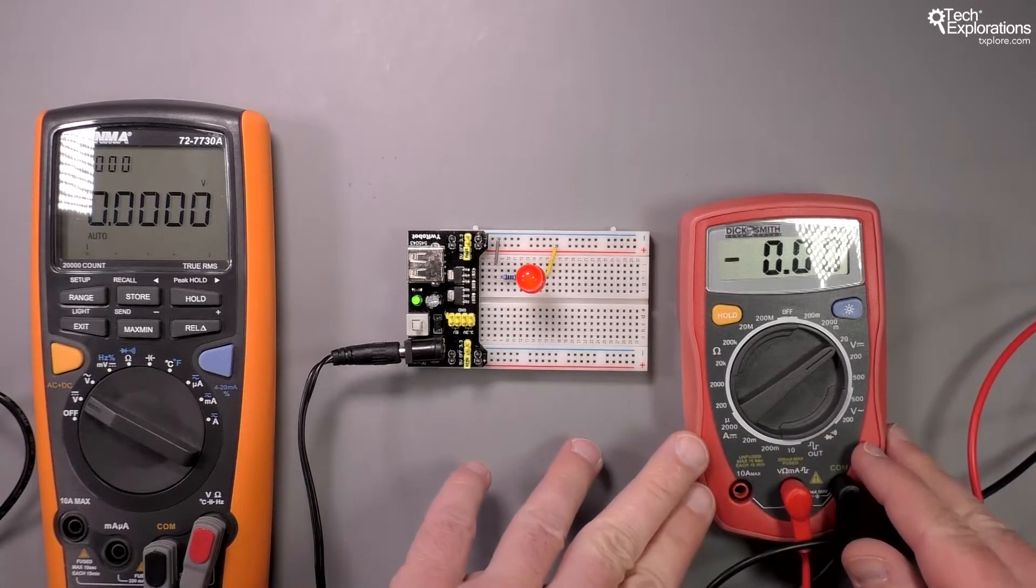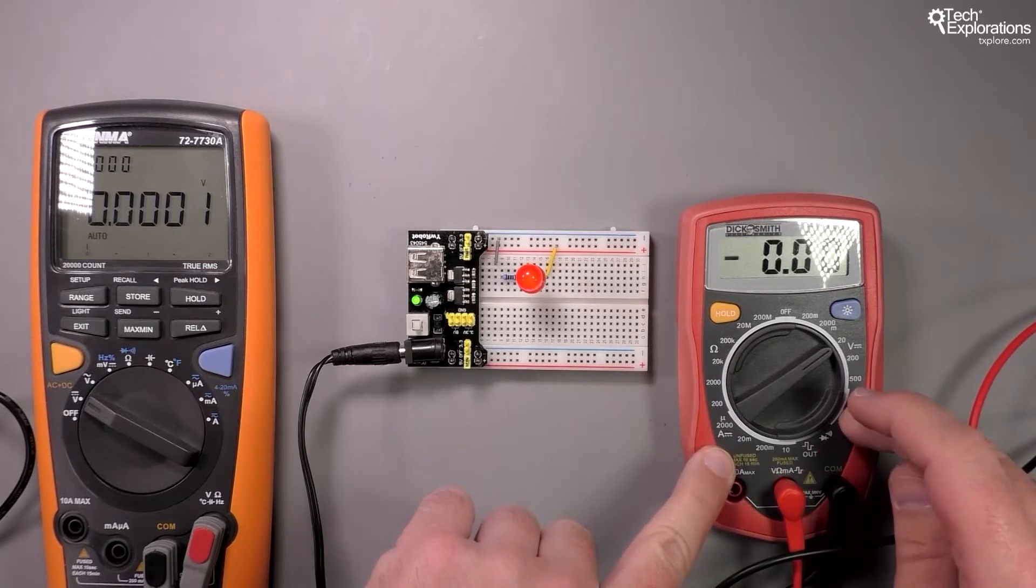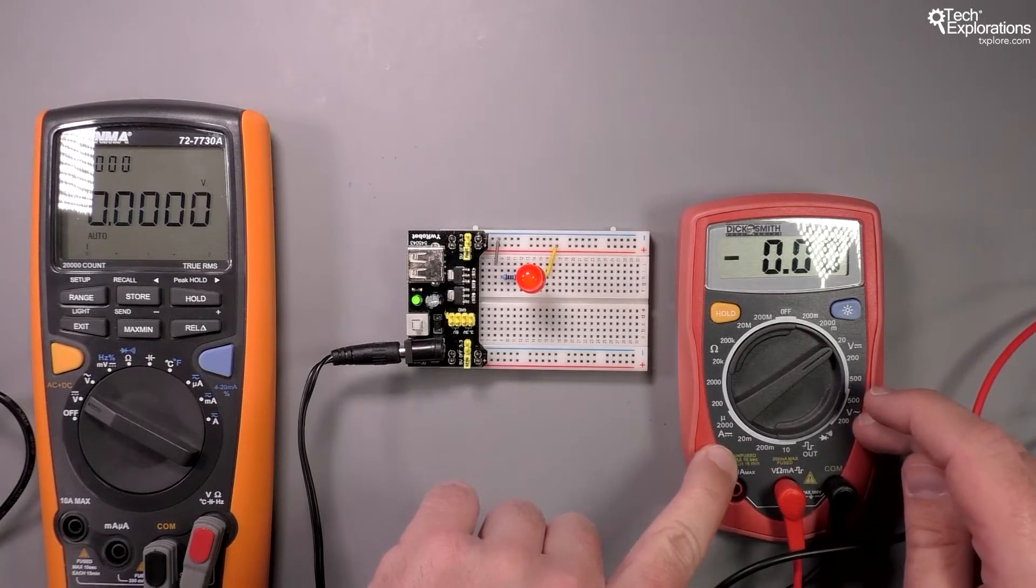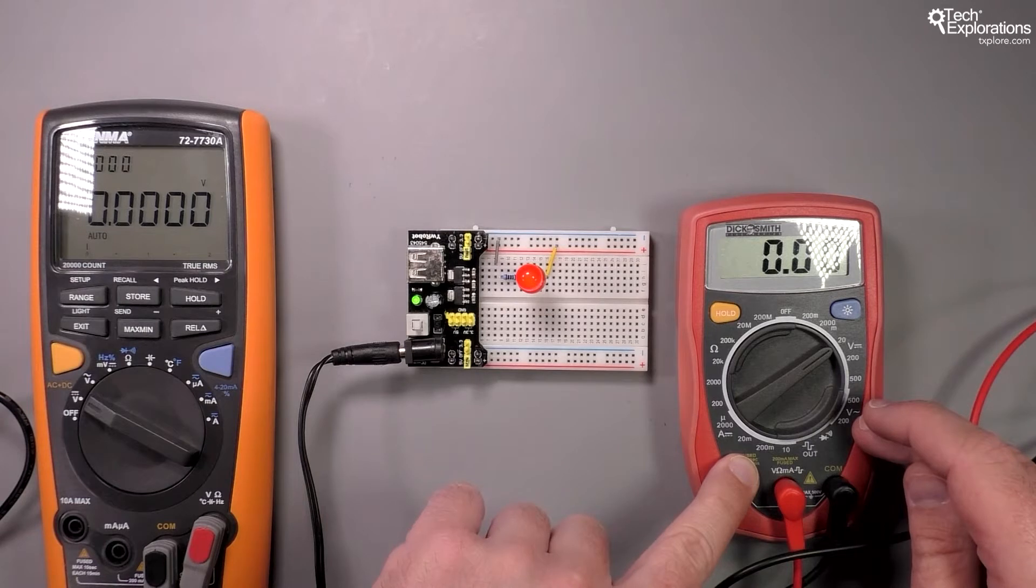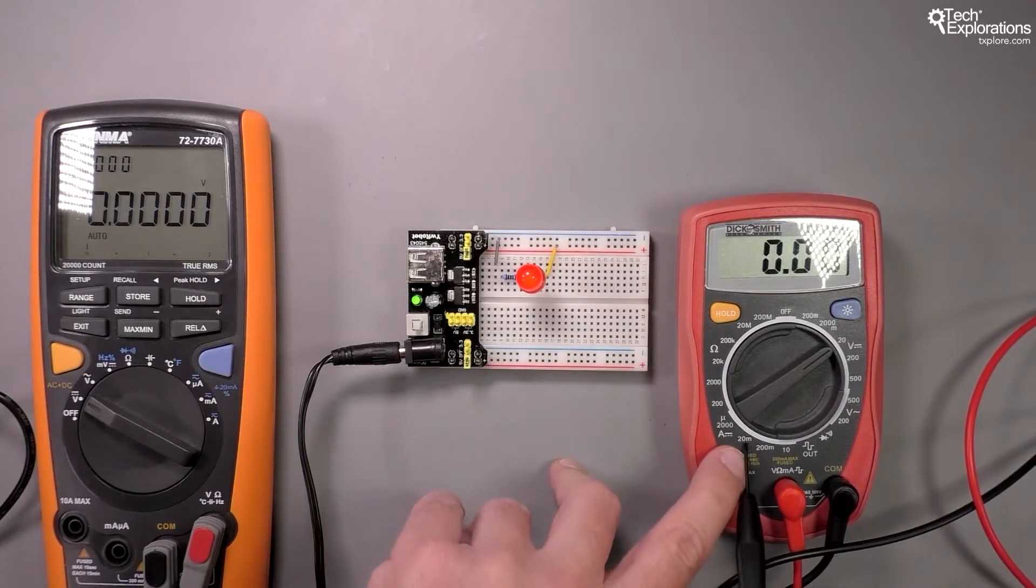Both my multimeters can measure current. With the cheaper multimeter, I'll have to tell it approximately how much current I think the LED is consuming. At this point, I guess it's about 20 milliamps.